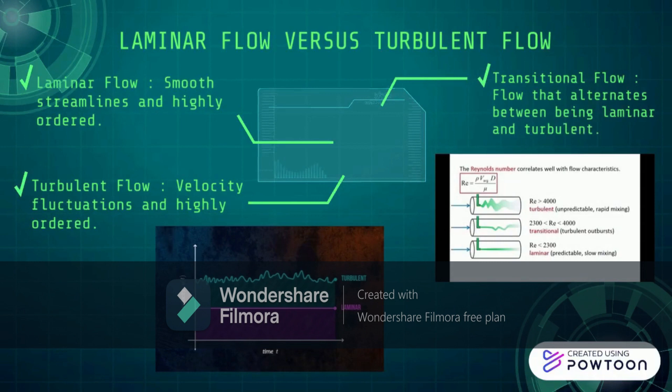This formula is used to find the type of flow using the Reynolds number formula: ρ stands for specific density of the liquid, V stands for velocity, D stands for diameter of the pipe, and the result is divided by dynamic viscosity.